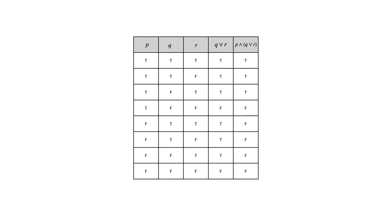In the previous video, I talked about a way of organizing this systematically. You take the last variable — in this case R — and alternate it: true, false, true, false, true, false, true, false. Then you take the second-to-last variable and alternate it differently: two trues followed by two falses, and so on. For the first variable, you do four trues followed by four falses. That ensures you have every possible combination of true and false for each variable without repeating any.